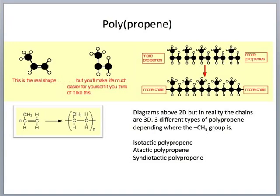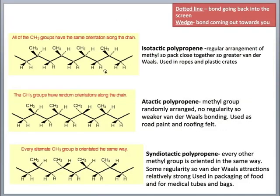The three types are isotactic, atactic, and syndiotactic. Isotactic polypropene has all of the methyl groups with the same orientation along the chain — a regular arrangement — so they can pack close together. Therefore the van der Waals forces are greater, making it quite strong. Isotactic polypropene is often used in ropes and plastic crates.